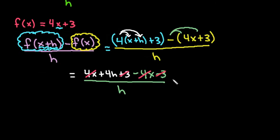3 minus 3 cancels out, and every term that you should have left should have an h in it. So I have 4h divided by h, and then I can simplify this, and it would give me 4.